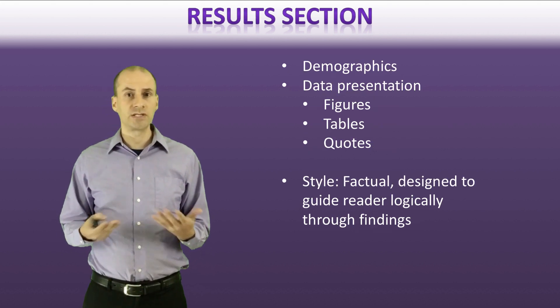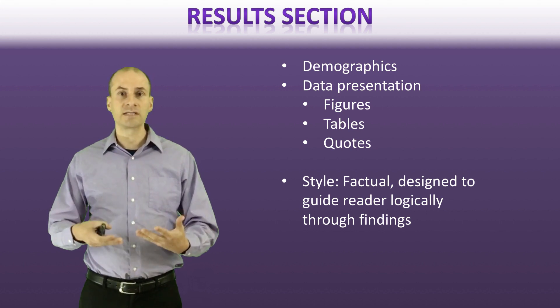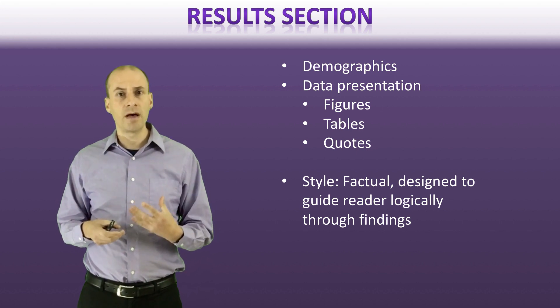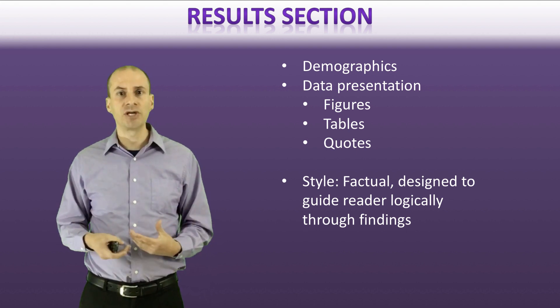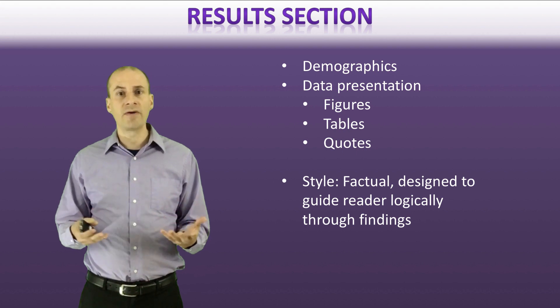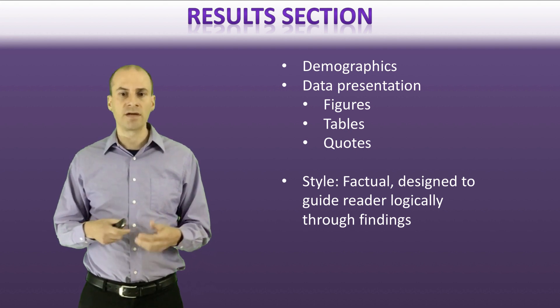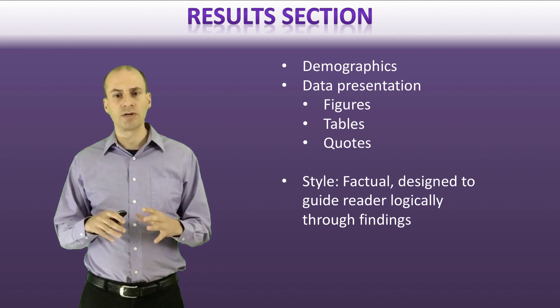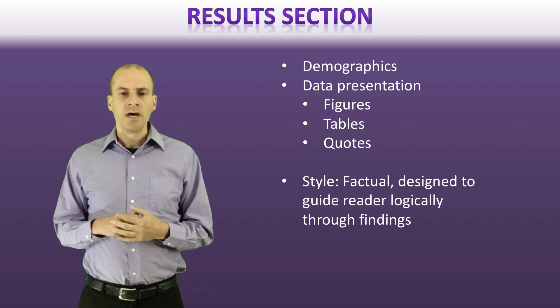All right. So the next section that you'll see is the results section, and this is where the author attempts to give the reader the information that they collected in as clear a way as possible. So typically in a results section, they'll say a little bit about who was engaged in that study. So the demographics of the population, a little bit about information about how that study rolled out, in terms of how many people actually enrolled in the study, what the attrition rate is and stuff like that. So you will see some of that information usually at the beginning of the results section. Sometimes you'll see in the methods, but typically in the results section.